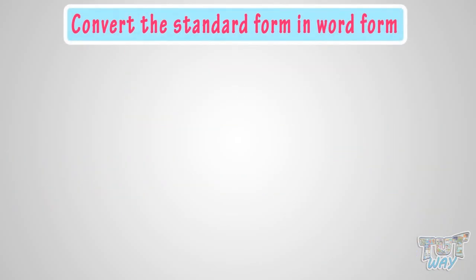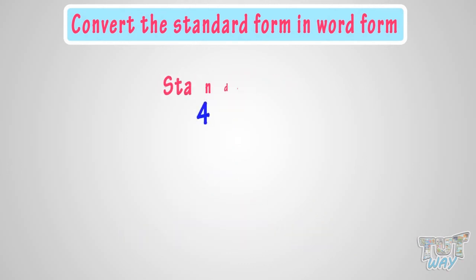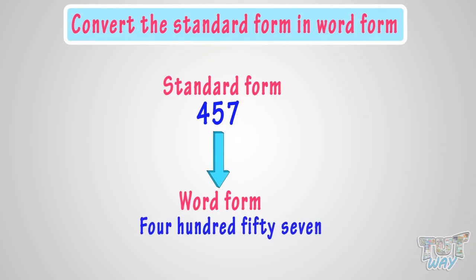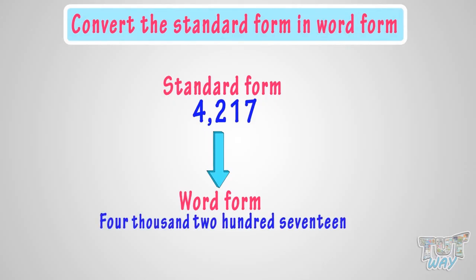We have already learned how to convert the standard form to word form. Now let's learn some examples of converting the standard form to word form. Here we have a number — how do you write this in word form? It's like this: four hundred and fifty-seven. Here is another number in standard form. Let's write it in word form: it is four thousand, two hundred and seventeen.